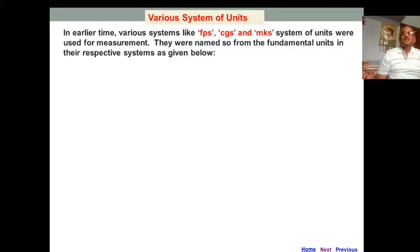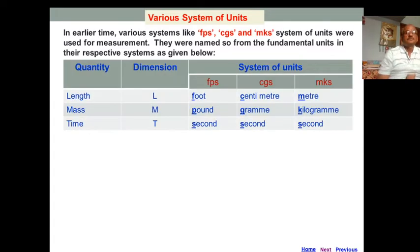First, various systems of units. Earlier FPS, CGS, and MKS systems of units were used. In FPS system, length is measured in foot, mass in pound, and time in second. While in CGS, length, mass, and time are in centimeter, gram, and second respectively.